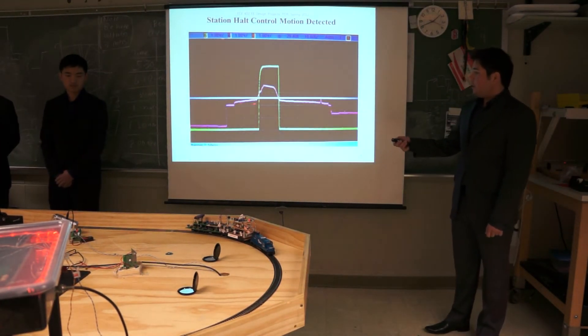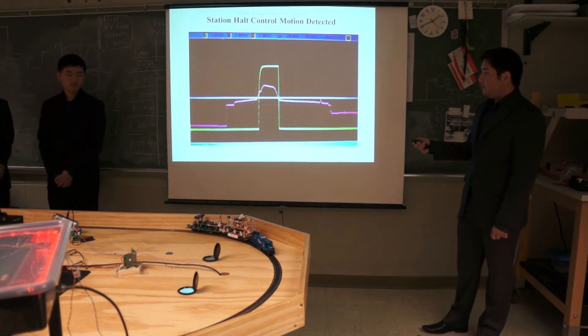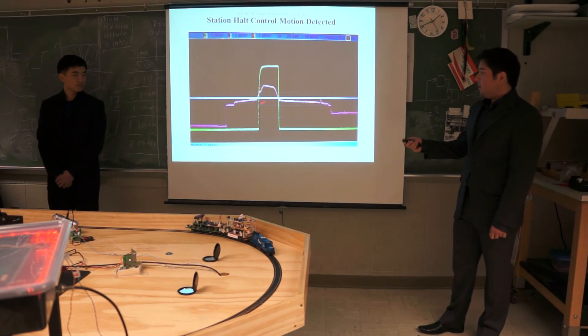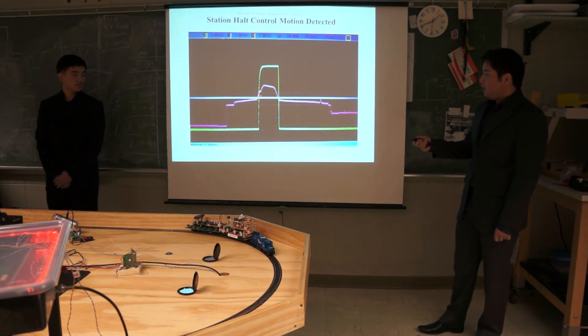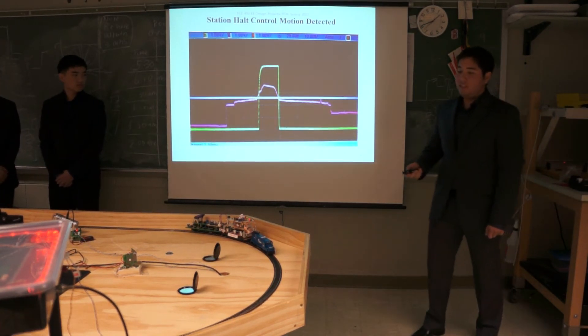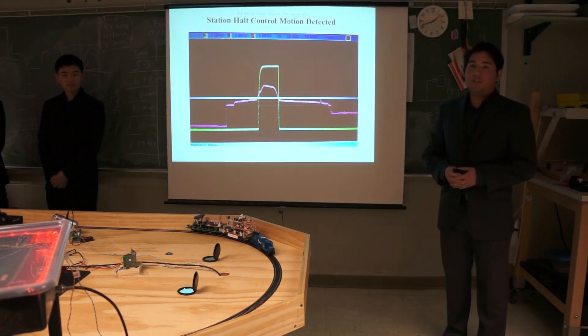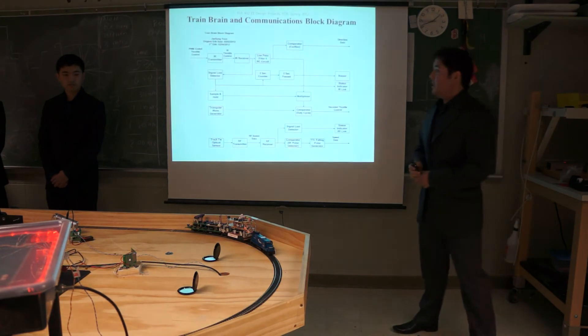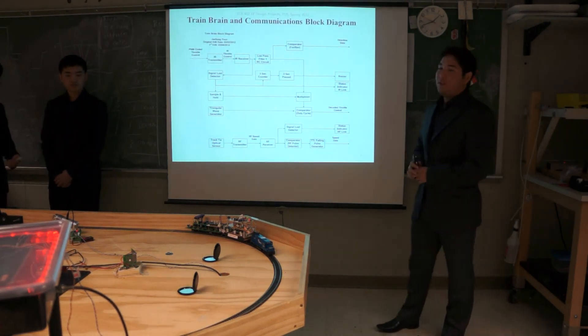We can see here in pink, that's the NTSC signal, video signal of line 40. And here's this straight line here is my threshold. So whenever the train comes we can see a spike here and through a comparator we can see that there is motion. In this way we can detect motion in the station and bring the train to a control stop. Now Jason will start to talk about train brain and communications.